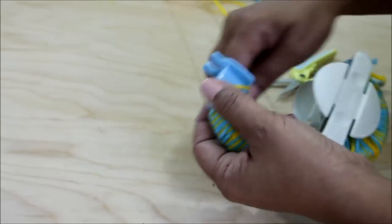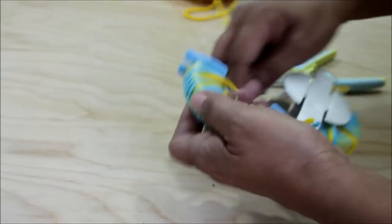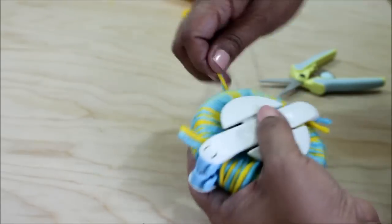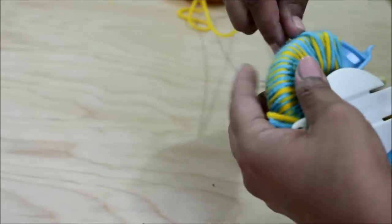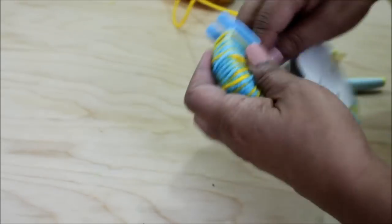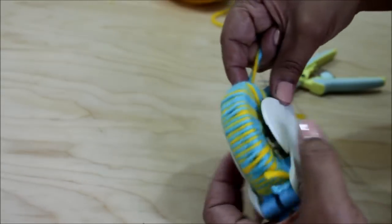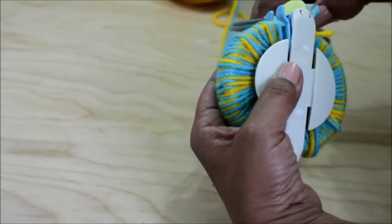And like I said, you can keep wrapping it till it just looks like one big dense area. The more you wrap the denser your pom-pom. So I'm only gonna wrap enough to fill up the hook and then I'm cutting.